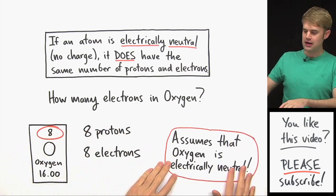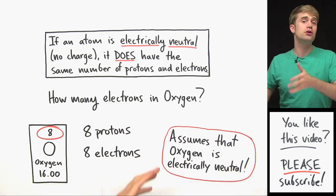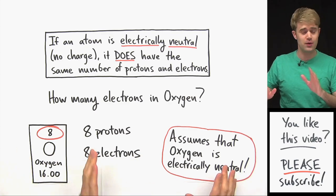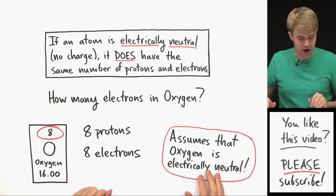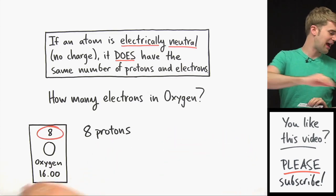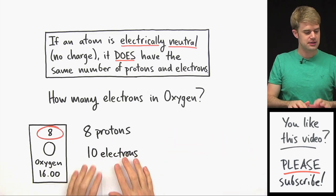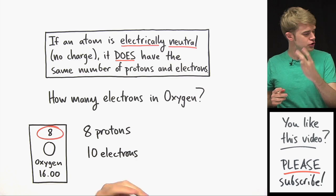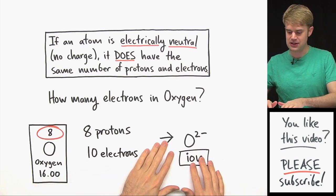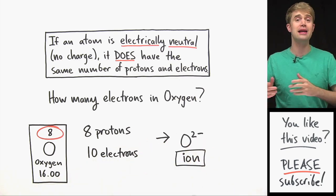That assumes that the oxygen is electrically neutral. But that's not always the case. It doesn't have to be that way. For example, instead of having eight electrons, we could have ten electrons. This oxygen could pull in two extra electrons and in that case, it becomes an O2 minus ion.